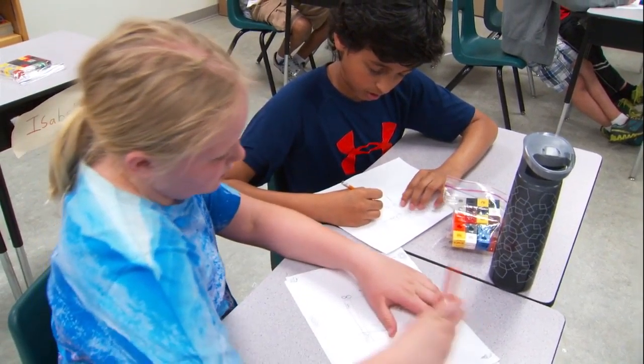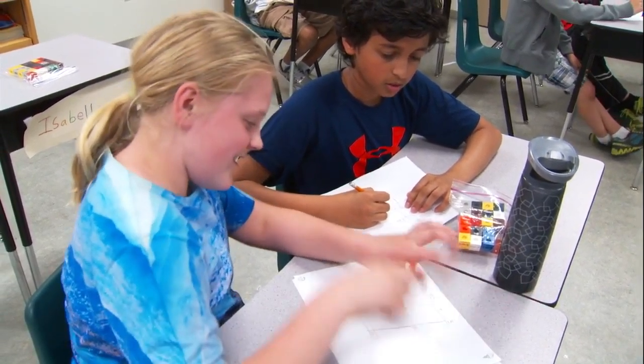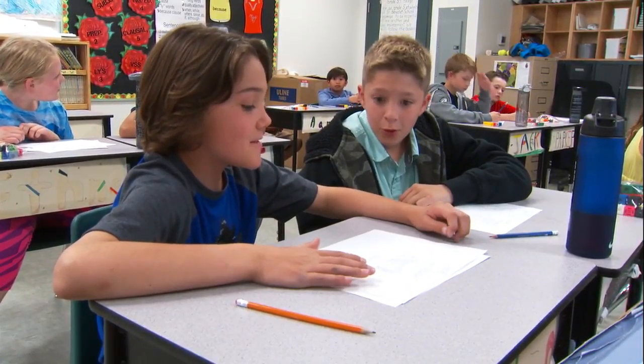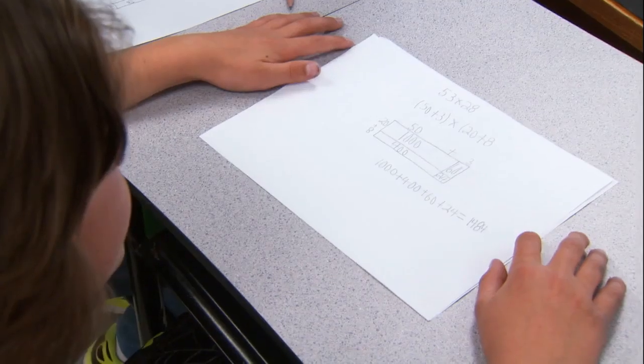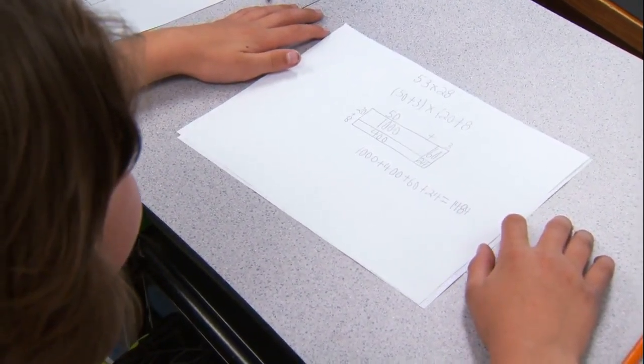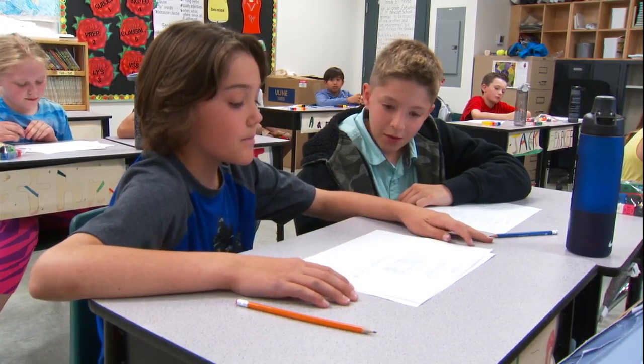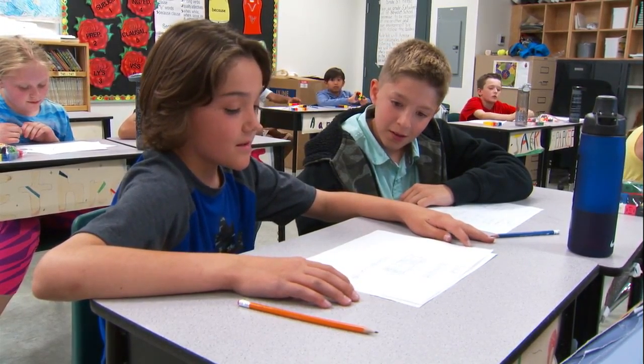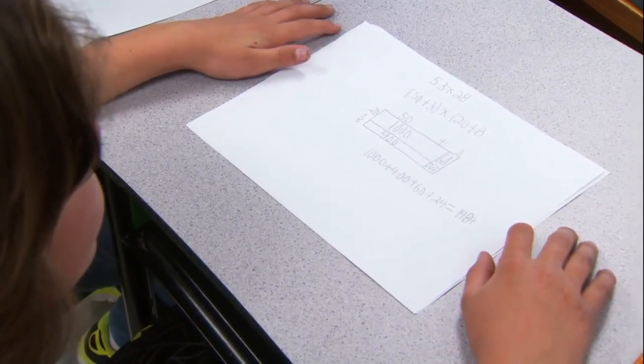It is important for students to explain their strategy to others. I split up 53 into 50 plus 3 and 28 into 20 plus 8 and then I put it into an array. Then I added it all up, all four numbers up, and it equaled 1,484.